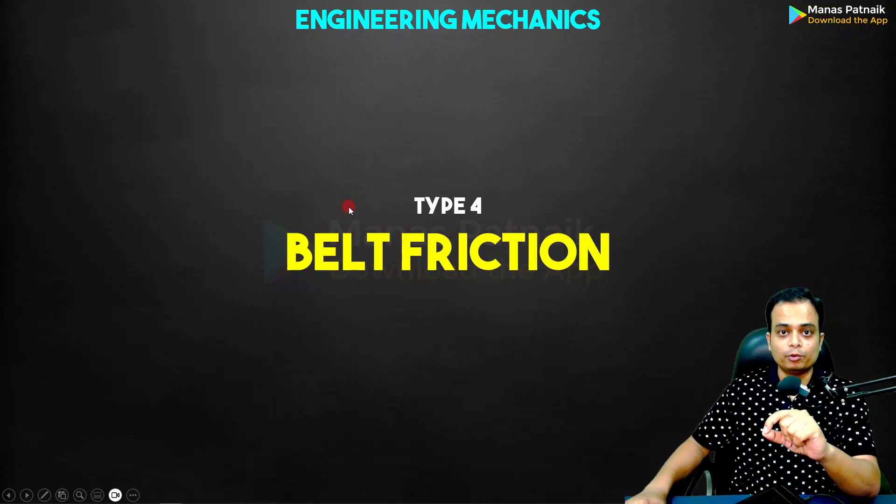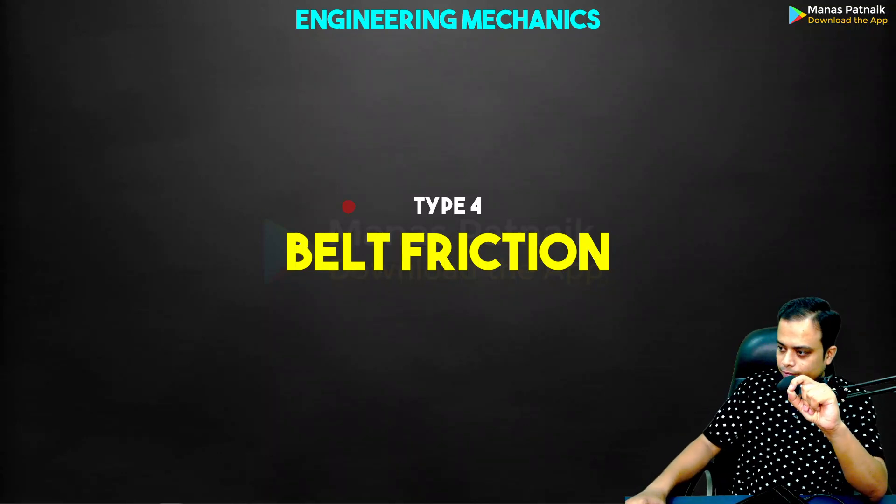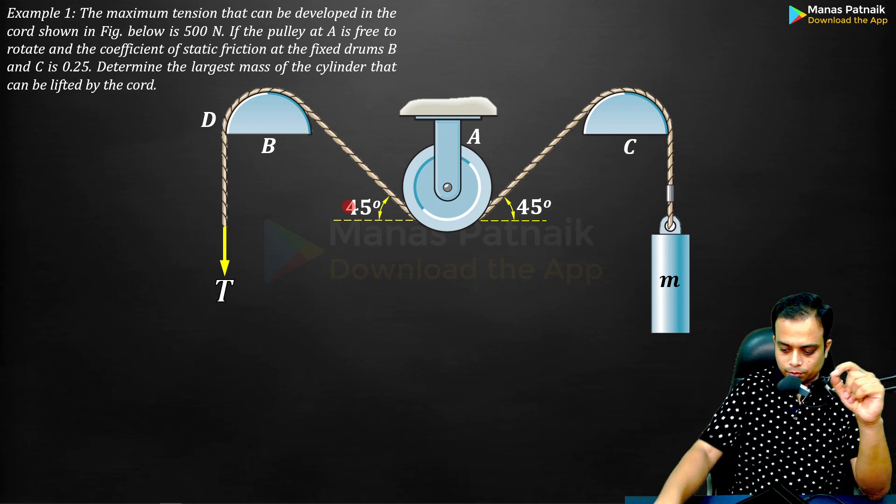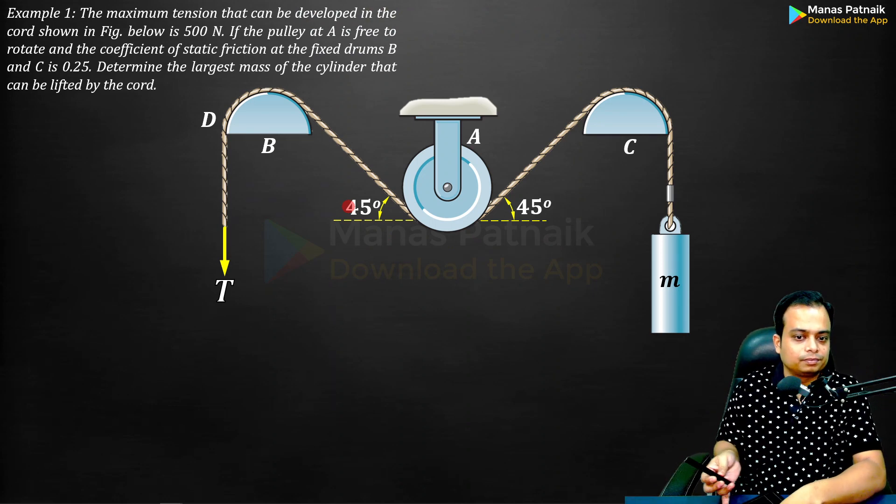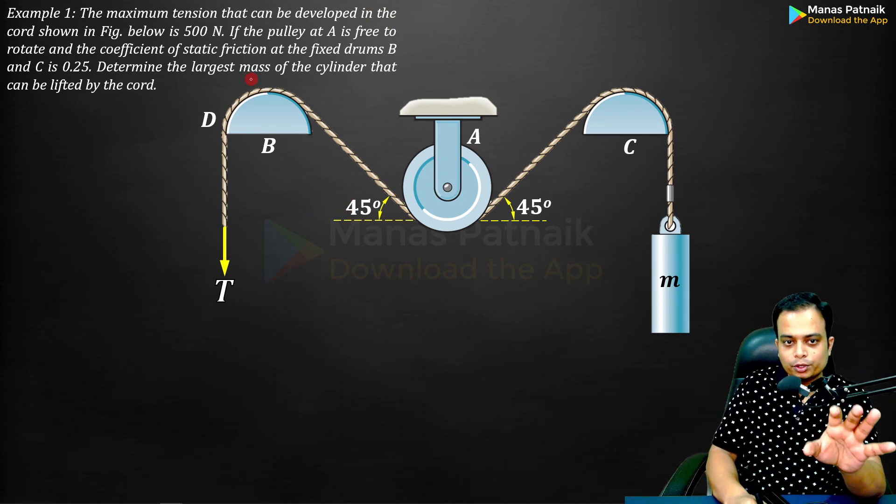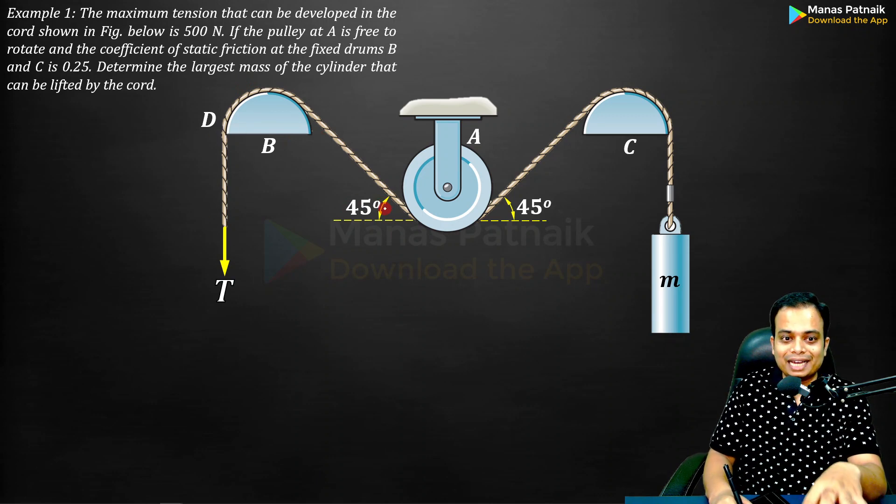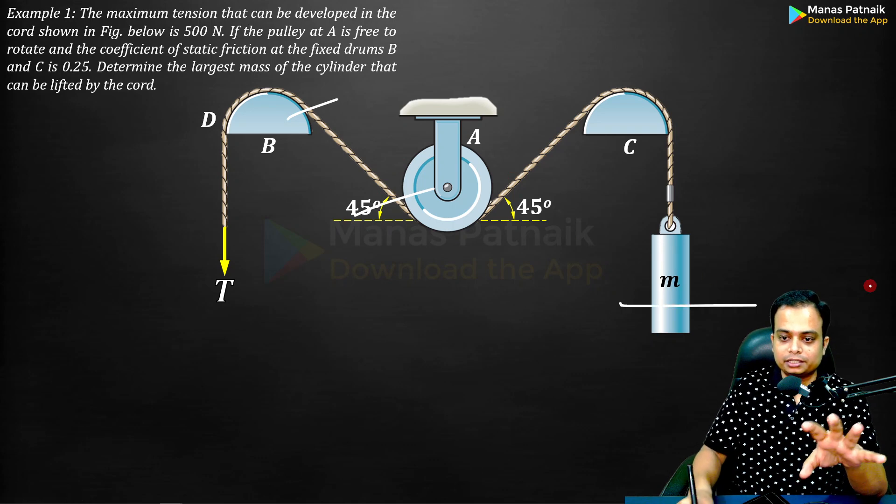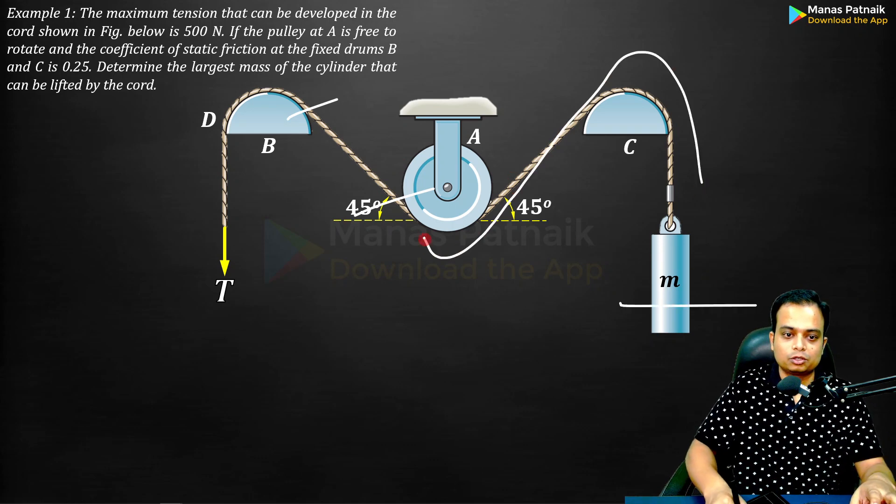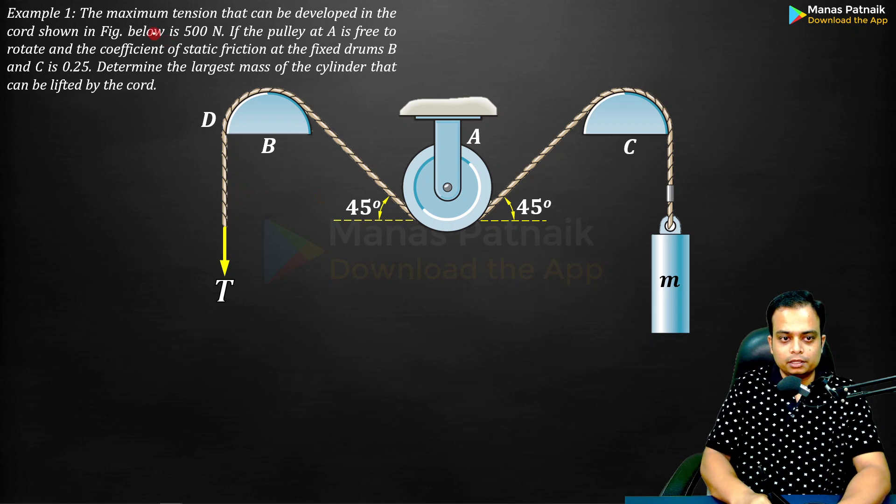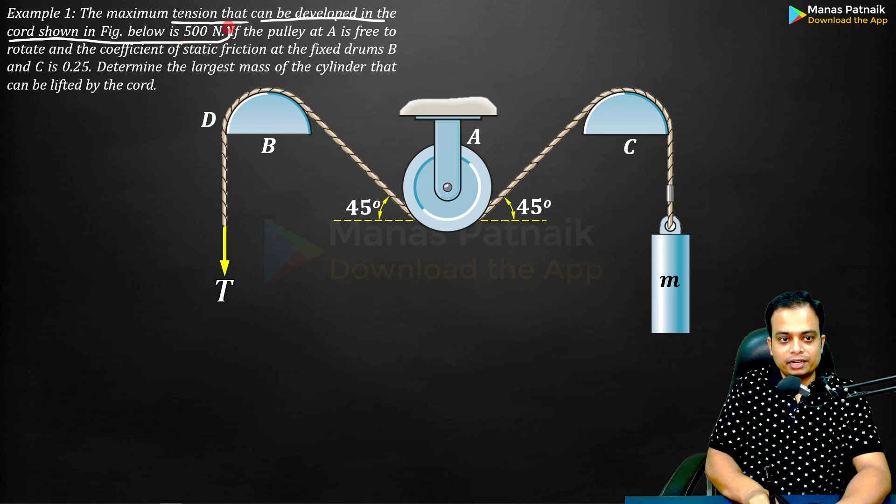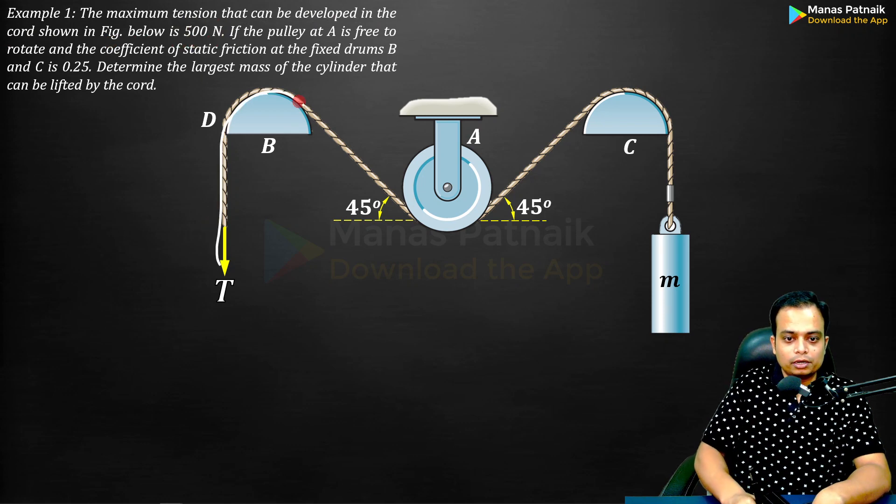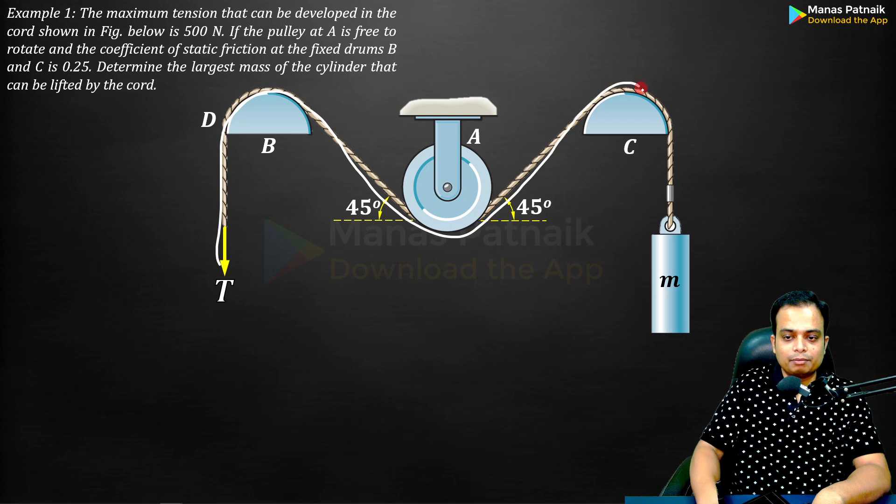This is problem number one on belt friction. Let me read the problem and simultaneously we'll understand this entire arrangement involving drums, pulleys, masses and this chord. The maximum tension that can be developed in the chord shown in the figure below is 500 newtons.